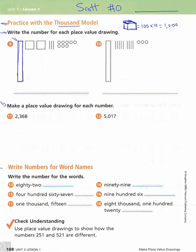The bottom section says 'write numbers for word names.' I'll read the numbers out loud and you write them down. Number 13: eighty-two. Number 14: ninety-nine. Number 15: four hundred sixty-seven. Number 16: nine hundred six. Number 17: one thousand fifteen. Number 18: eight thousand one hundred twenty.